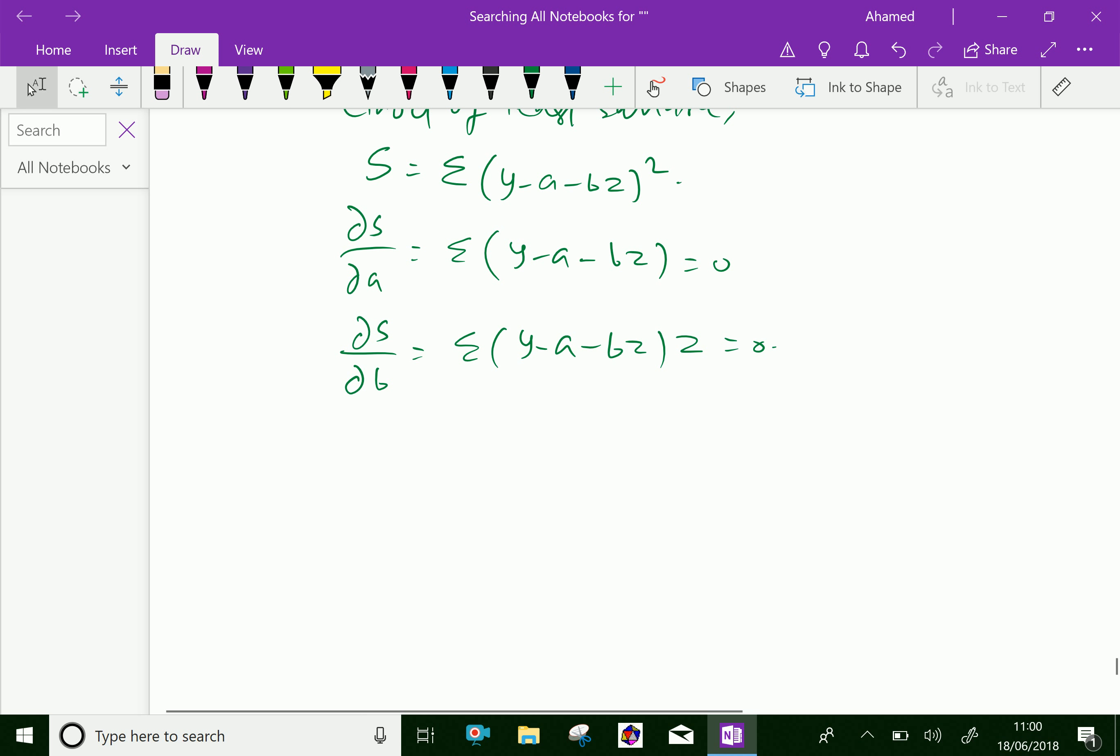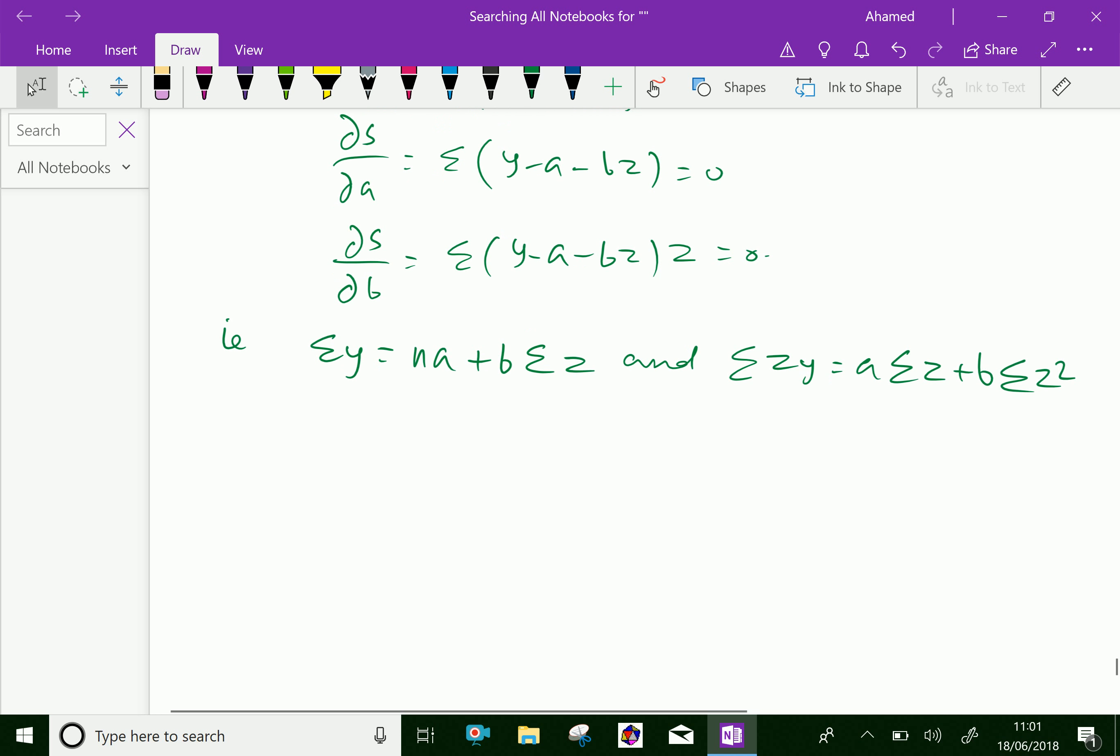Therefore, our equations are sigma y equal na plus b into sigma z, and the second equation sigma zy equal a sigma z plus b into sigma z square. These are the two equations to be solved, and find the value of a and b, and substitute this a and b in linear equation, we will get the unknown values.